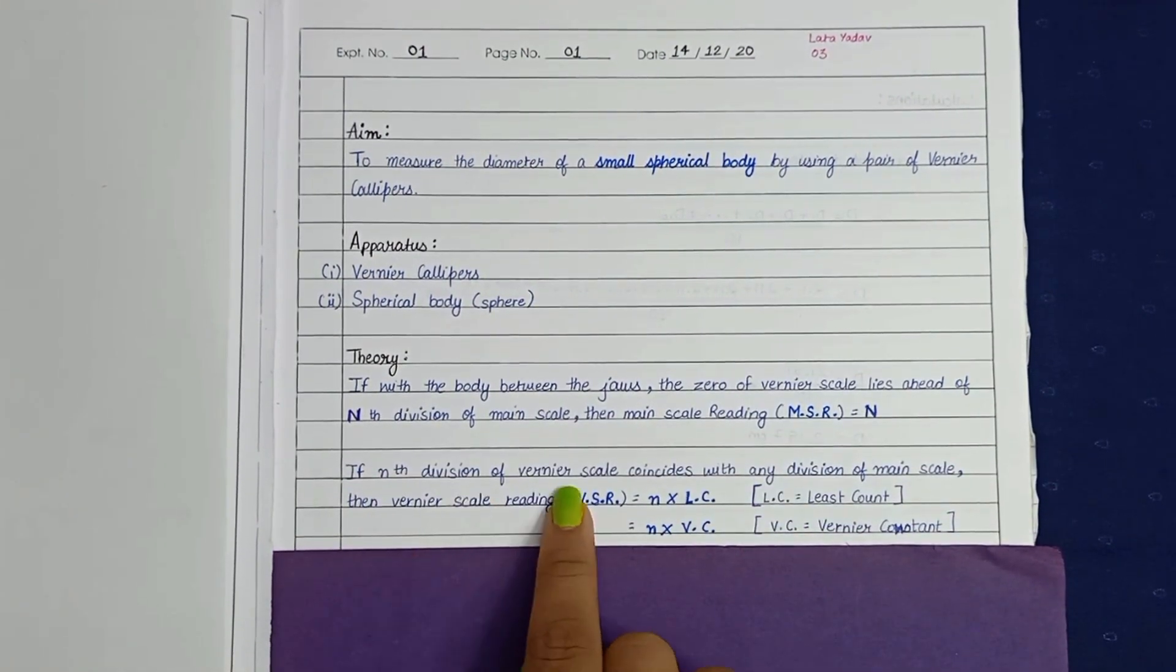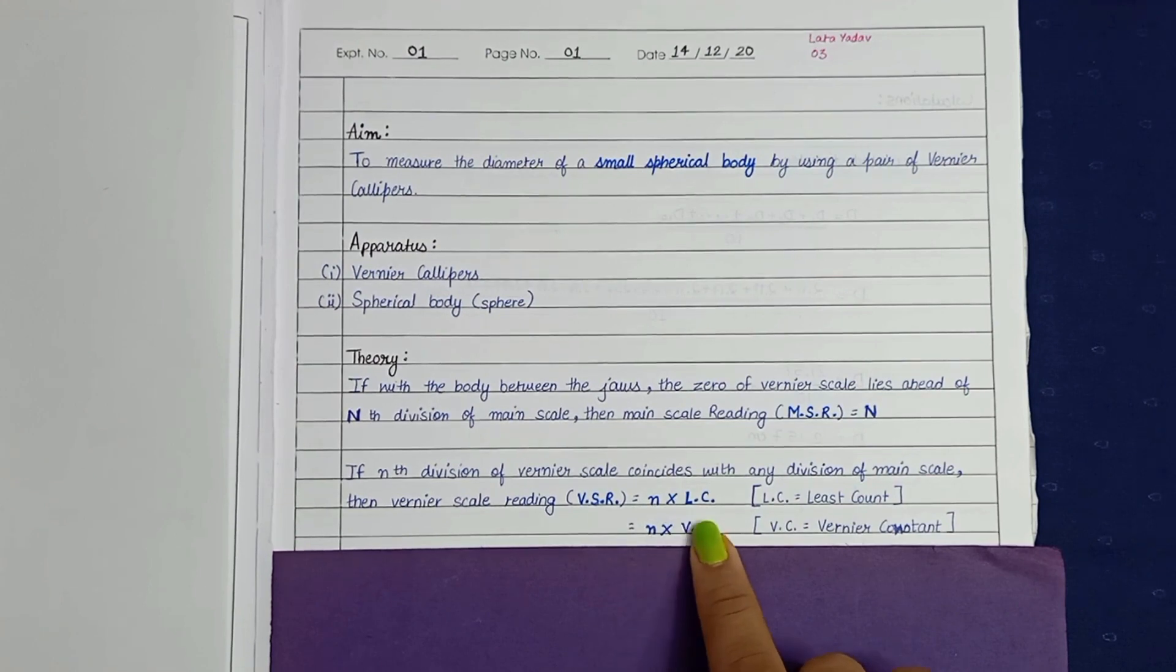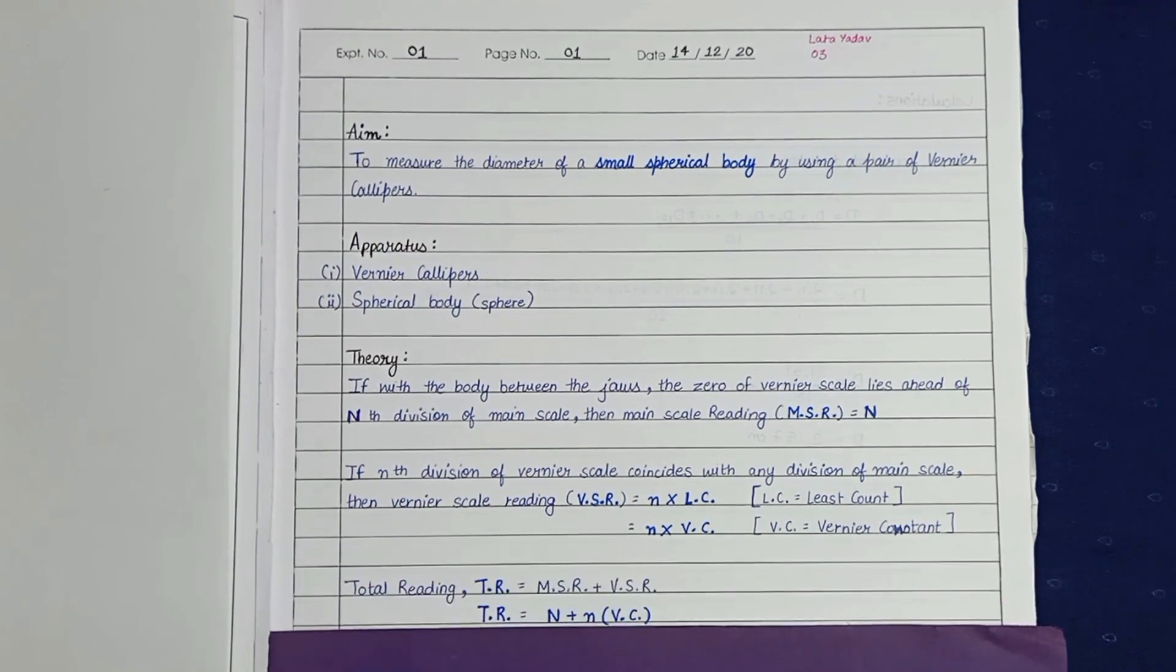If nth division of vernier scale coincides with any division of main scale, then vernier scale reading VSR is equal to n into least count or n multiplied by vernier constant.